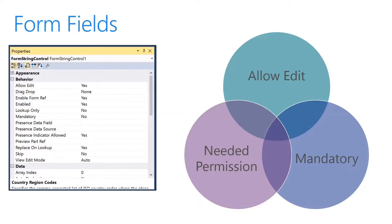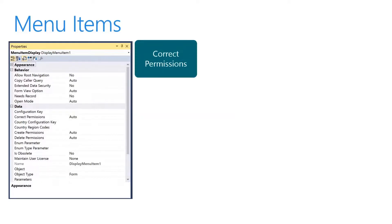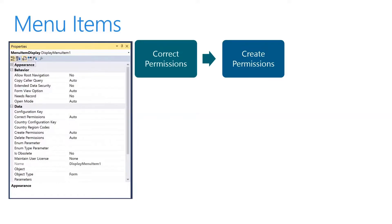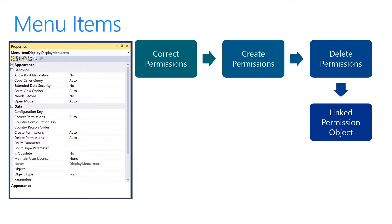The Needed Permission values represent a hierarchy — Read is the weakest and Delete is the strongest. Let's now look at menu items and security. Correct Permissions specifies whether correct permission will be available to select when privileges are assigned to the menu item. Create Permission specifies whether create permission will be available. Delete Permission specifies whether delete permission will be available. We also have Linked Permission Object, which specifies the name of another object — for example, a form or report — whose permissions are applied to this menu item. This is typically used with action menu items.